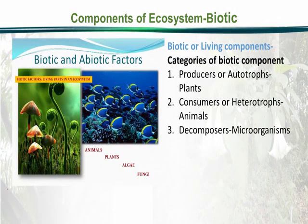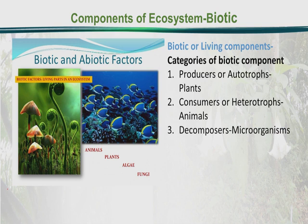We can categorize these biotic components into producers, which we can call autotrophs — these are usually green plants — and then the consumers, which are heterotrophs, usually animals that are dependent on plants for food.